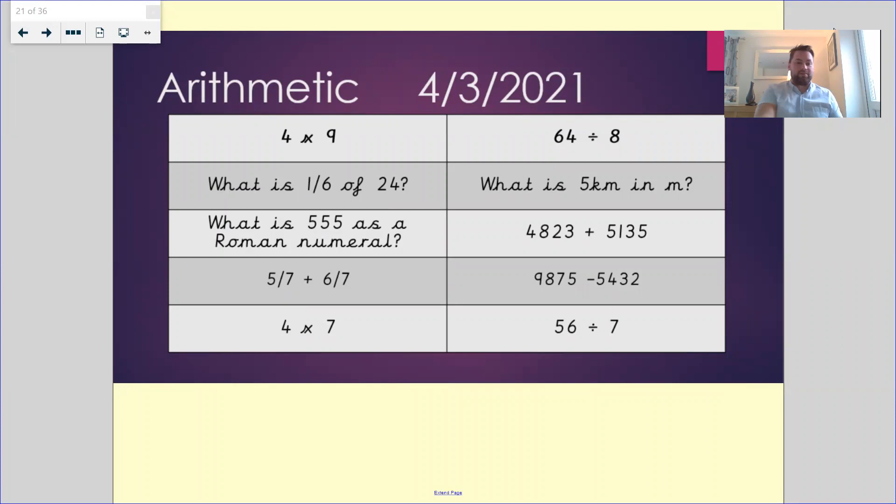Question number four, five sevenths plus six sevenths. So we're doing five plus six, which is equal to 11 over seven. Or if you want to write that as a mixed number, that is one whole and four over seven remaining.